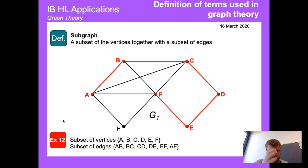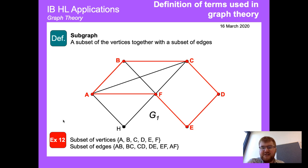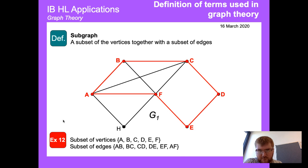Here's a slightly larger subgraph — we simply identify all the nodes in the subgraph: vertices A, B, C, D, E, and F, and then highlight all the relevant edges.